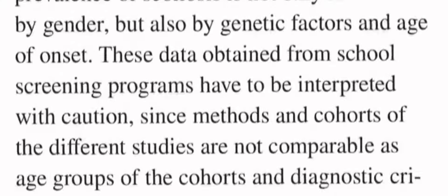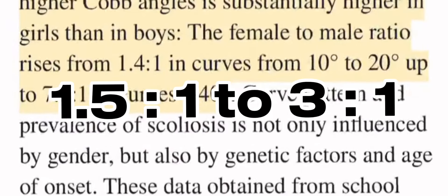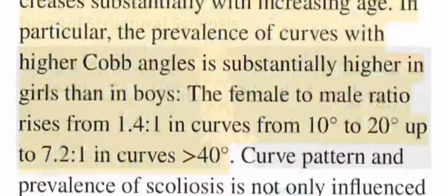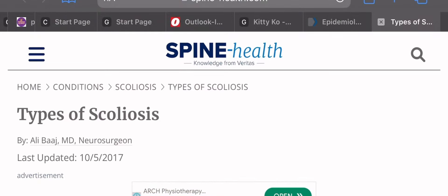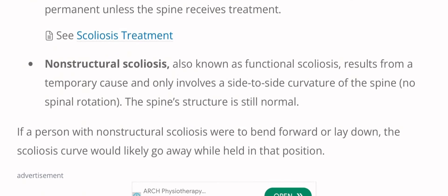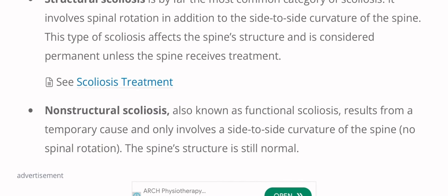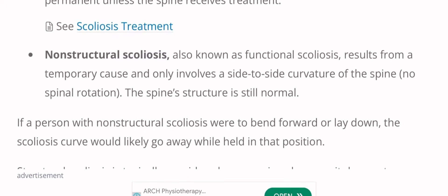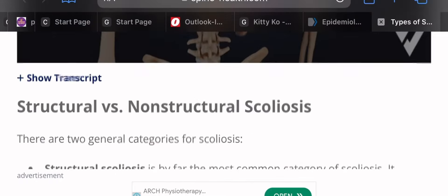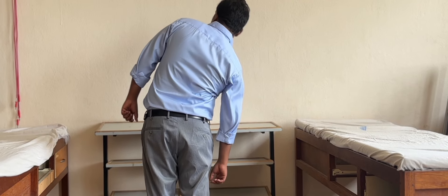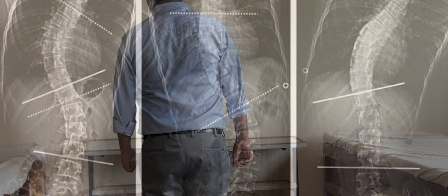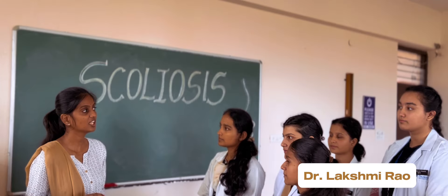The female-to-male ratio is approximately 1.5:1 to 3:1 for idiopathic scoliosis. Two types of scoliosis are commonly seen: structural and non-structural. In structural scoliosis, the spine does not correct itself when bending on the convex side, but in non-structural scoliosis the spine corrects itself when the patient bends on the convex side.